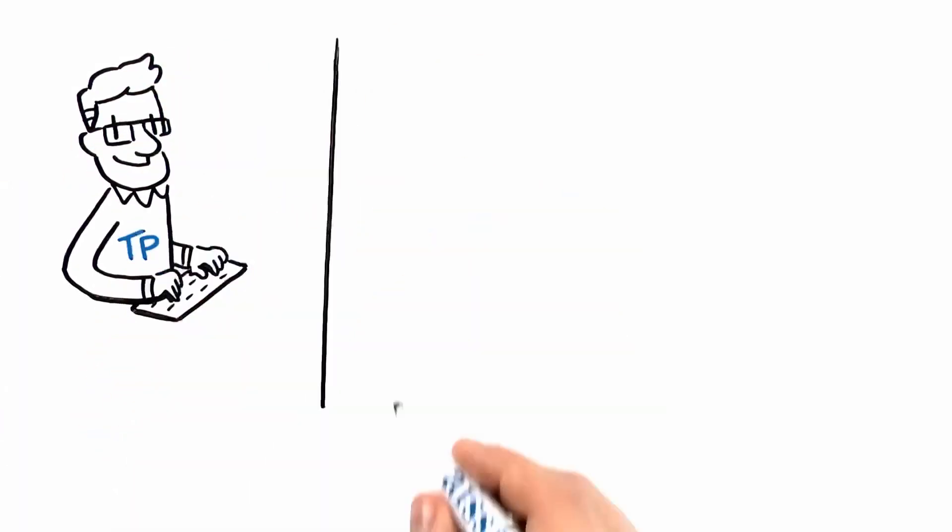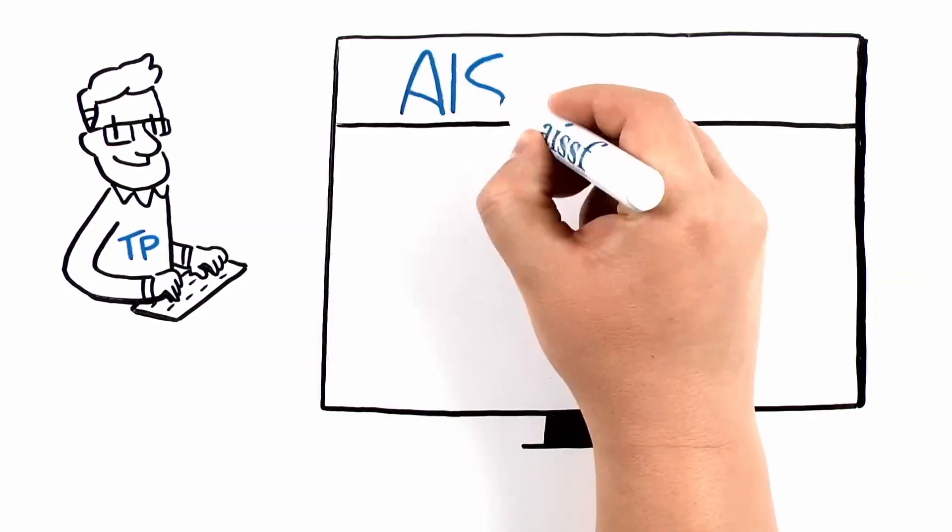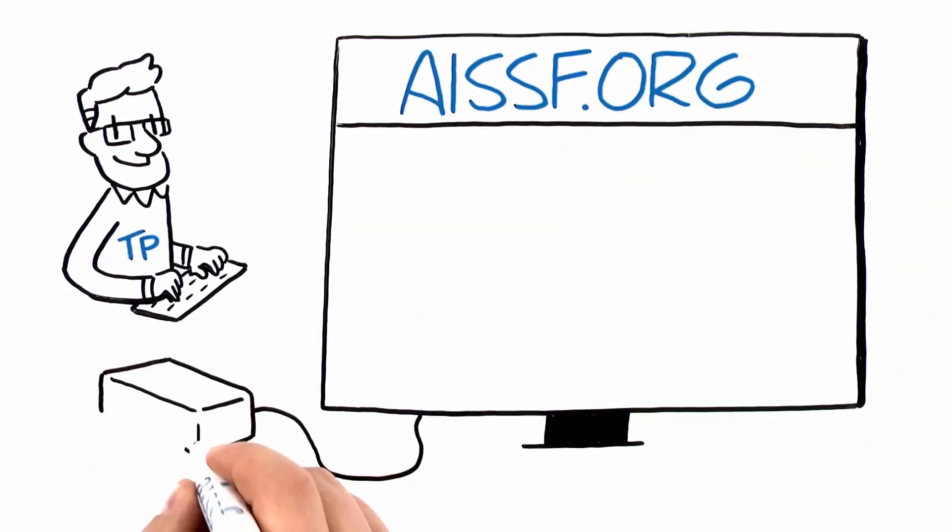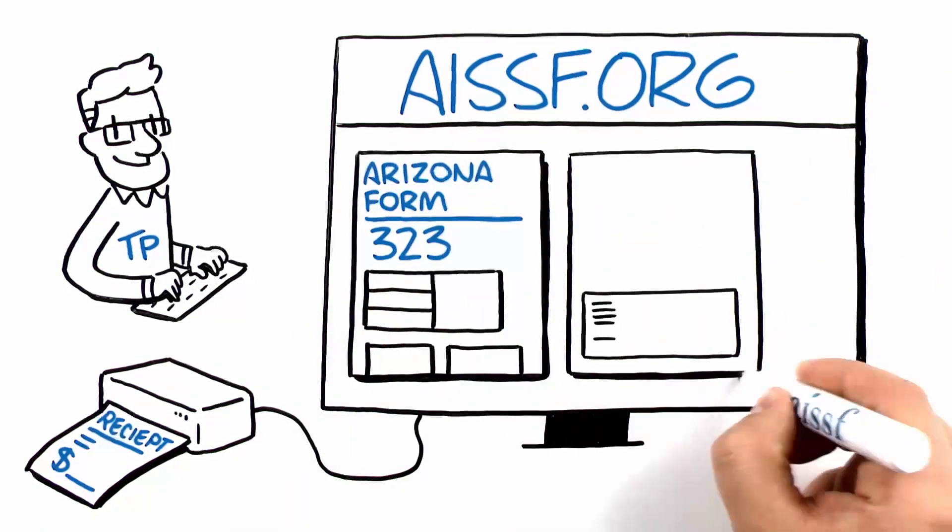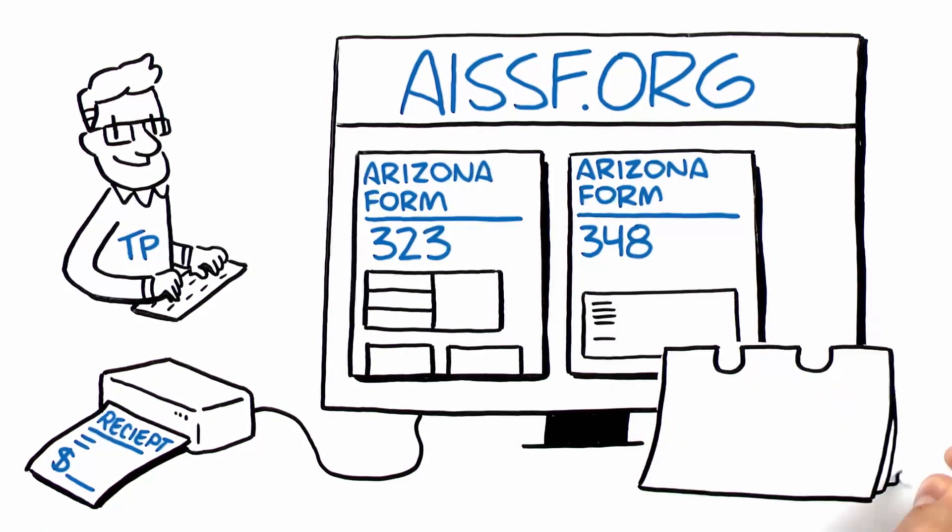First, make your tax credit contribution online at AISSF.org and be sure to keep the receipt. Then when you file your Arizona income tax return, make sure to claim your tax credit on these two forms.